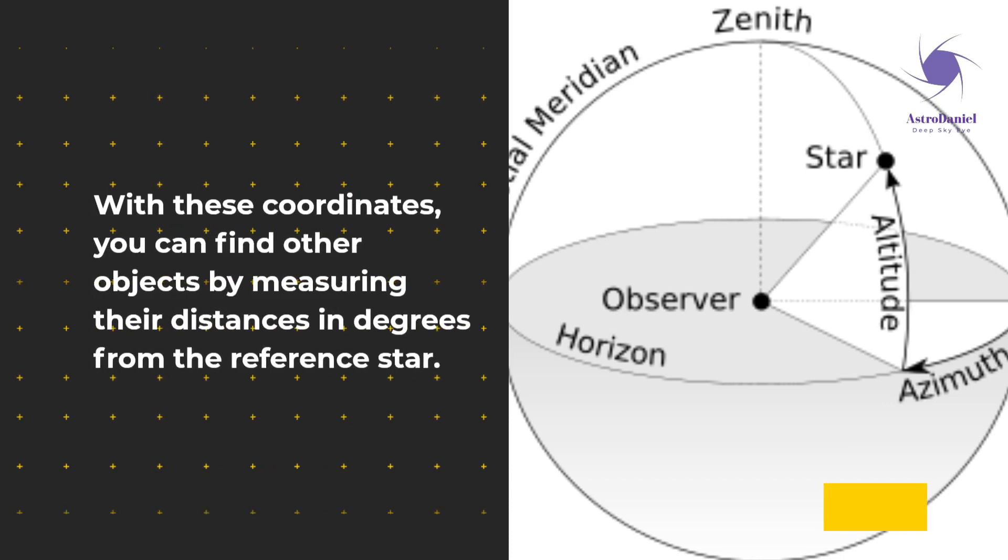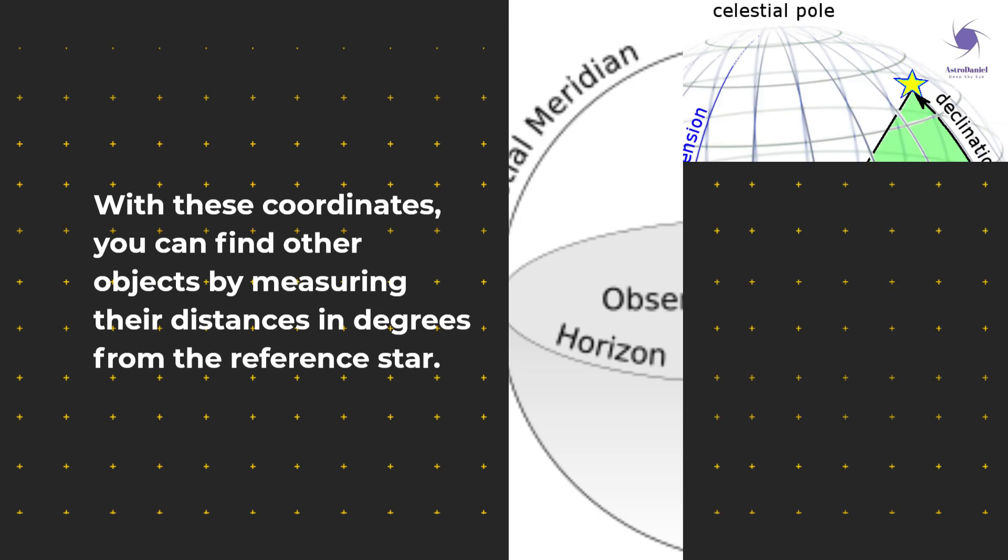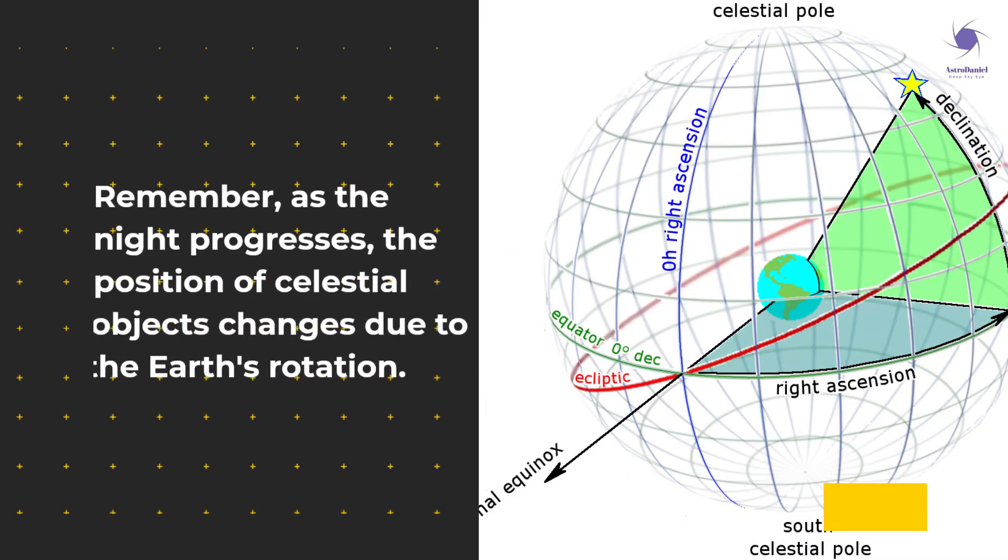With these coordinates, you can find other objects by measuring their distances in degrees from the reference star. Remember, as the night progresses, the position of celestial objects changes due to the Earth's rotation.